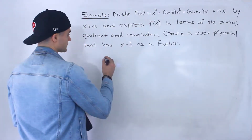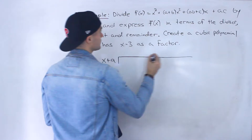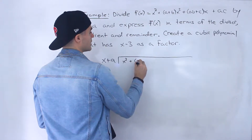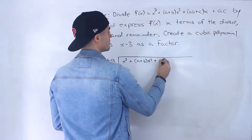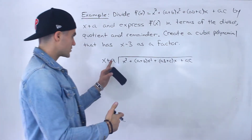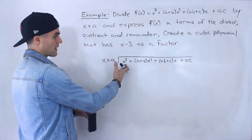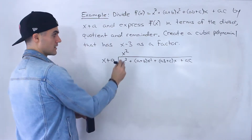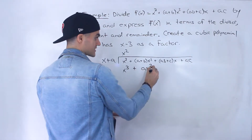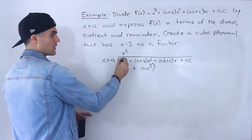What we're going to do is take that function and divide it by x plus a. So I'm going to write out this function again: x to the 3 plus (a plus b)x squared plus (ab plus c)x plus ac. Pretending that all of these are numbers, you just go through that same process as long division. So how many times does x go into x to the power of 3? x squared times. x squared times x is x to the 3, and then x squared times a is ax squared.